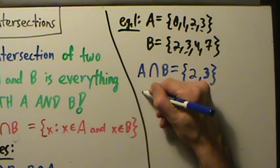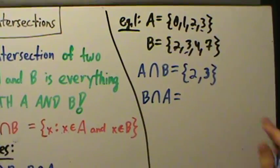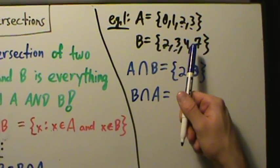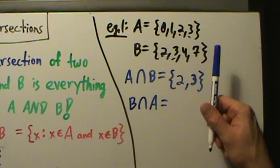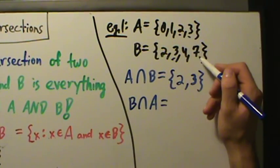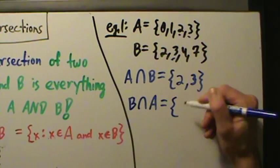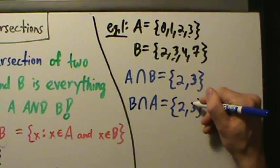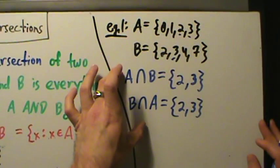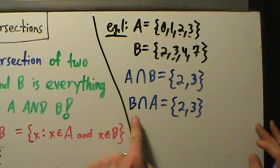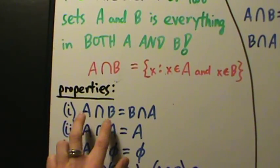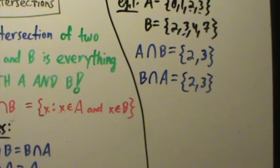Now what if we said B intersected with A instead? Then we'd say: what's B? 2, 3, 4, 7. What's A? 0, 1, 2, 3. Is there anything that appears in both B and A? Yes — 2 appears in both, 3 appears in both. 4 and 7 are only in B; 0 and 1 are only in A. Notice it does not matter what order we talked about the sets — A intersect B is the same thing as B intersect A.